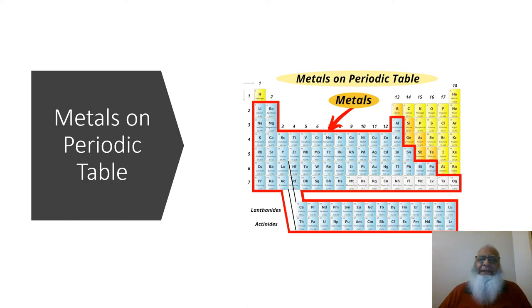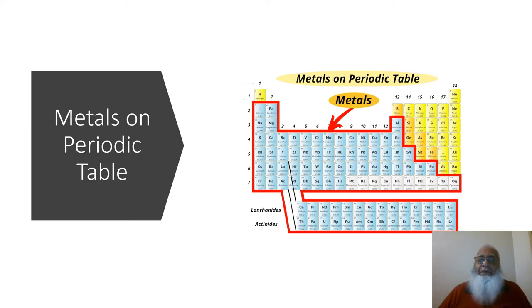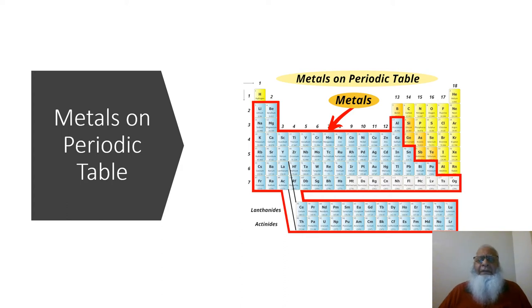As corrosion mainly deals with metals, how many metals are there? This slide shows all the areas marked in red — they are the metals in the periodic table. There are almost 90 plus metals; in some cases about 94. All these metals are found in nature in the form of ores. There is only one metal found as an element in nature, and that is gold. And that doesn't mean that gold does not corrode — gold also corrodes in sufficiently corrosive environments.